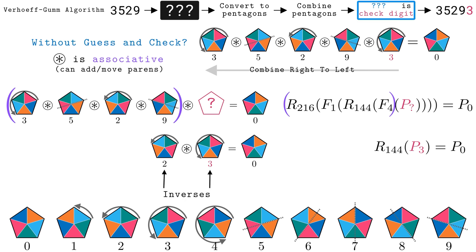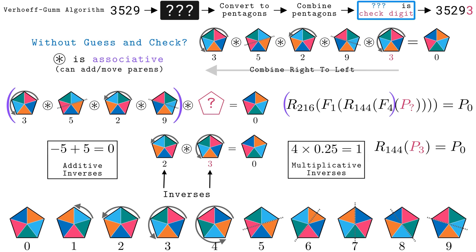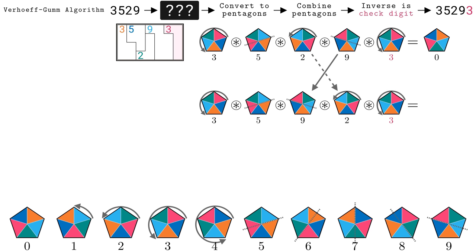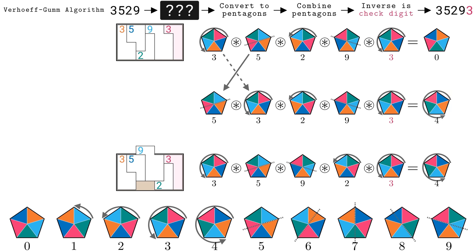Associativity means that we can insert parentheses wherever we like, and it will not change the final result. This gives us a lot more flexibility when dealing with the pentagons algebraically. We can put parentheses around the input four digits, leaving the mystery check digit on its own. Inside the parens is the calculation we did earlier, which resulted in pentagon 2. Now we just have to figure out which pentagon will get us back to p0 if we rotate it 144 degrees. The answer is the pentagon corresponding to the 216 degree rotation, p3. Mathematically, we say that p3 is the inverse of p2 because combining them results in p0. Just like negative 5 and positive 5 are additive inverses, or 4 and 1 quarter are multiplicative inverses. Finding the inverse of all combined pentagons is what we should use as a check digit to pack the box.